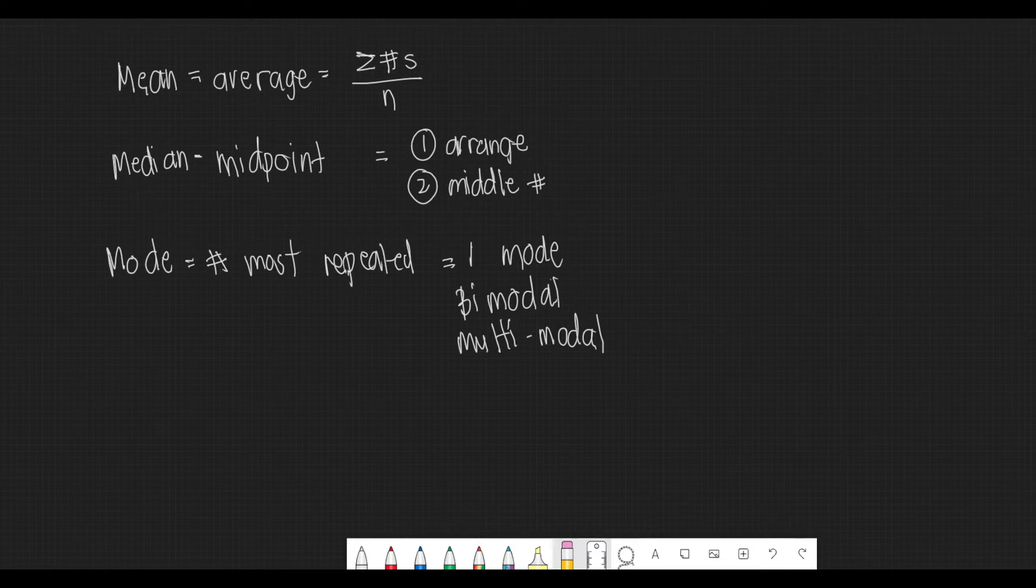Now, there are three types of measures under measures of central tendency, and those are namely mean, median, and mode. The mean is basically the average. We compute that by adding all the numbers in the given set divided by n, or the total number of data in that set.